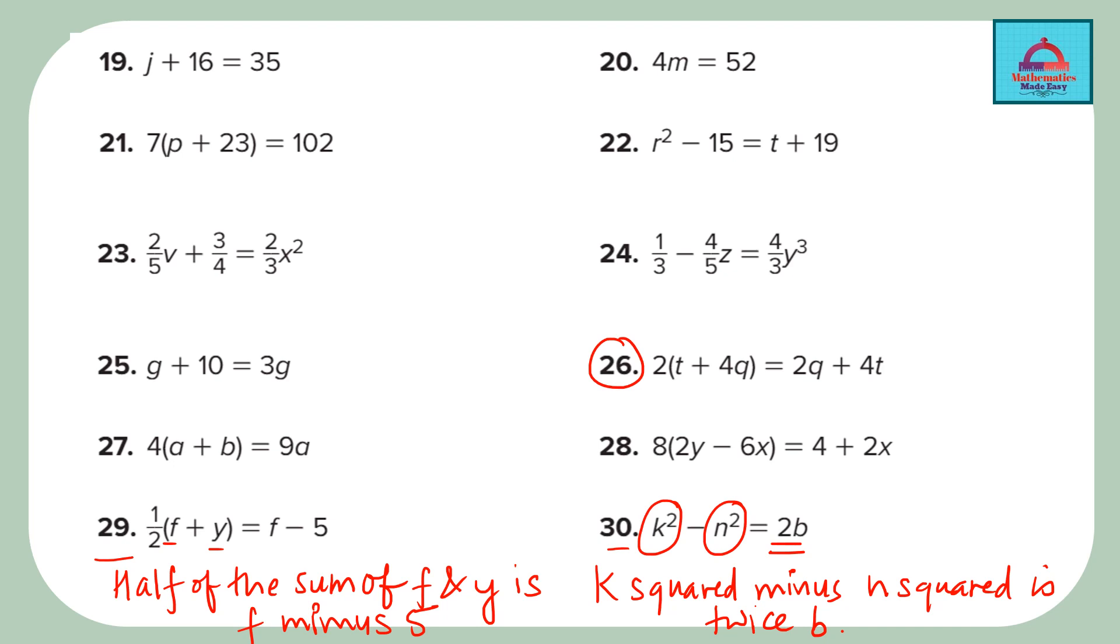Let's do one more, question 26. Here you see multiplication - 2 is being multiplied to t and here again you are just opening it, it's like a distributive property. So we can write 2 times the quantity - which quantity is it? It is the sum of two other quantities. So t plus 4q, 4 times q. That's the left hand side, is equal to how much? It becomes equal to 2 times q plus 4t.